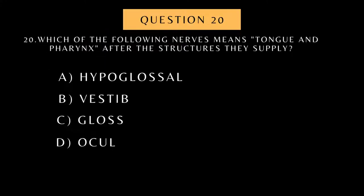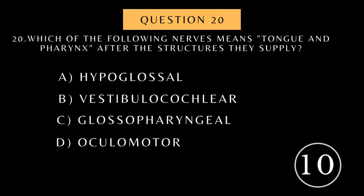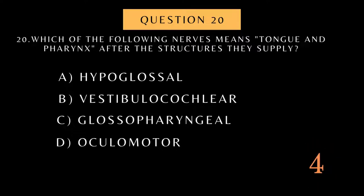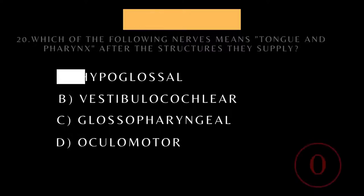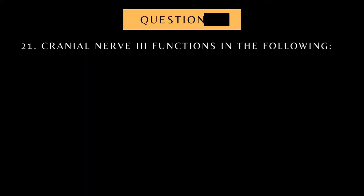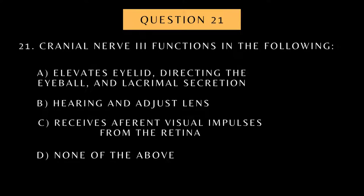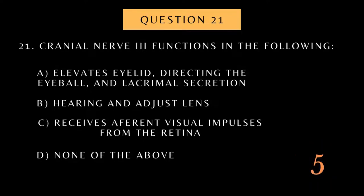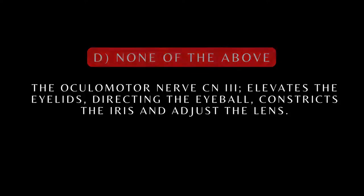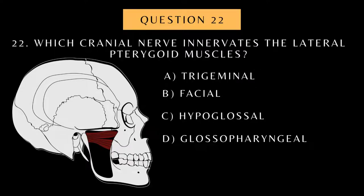Which of the following nerves is named after the structures they supply — tongue and pharynx? Cranial nerve three functions in the following. Which cranial nerve innervates the lateral pterygoid muscles?